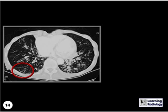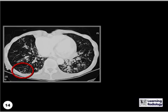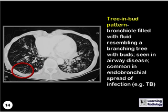What sign is demonstrated inside of the red circle? This is the tree and bud pattern, a bronchial filled with fluid, pus, or the like, resembling a branching tree with buds. It's seen in airway disease and is relatively common in endobronchial spread of infections, such as tuberculosis.